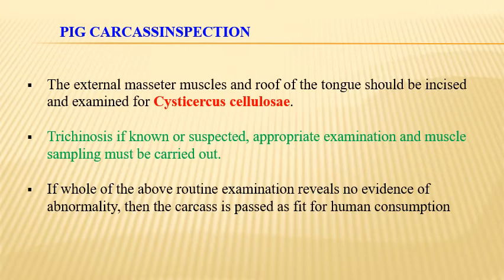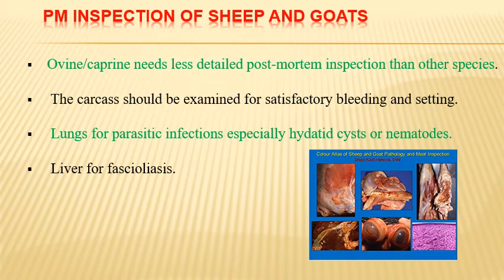Post-mortem inspection for sheep and goats: the procedures are almost similar to those explained for bovine. Ovine and caprine species need less detailed post-mortem inspection than other species. The carcass should be examined for satisfactory bleeding and setting. Lungs should be checked for parasitic infections, especially hydatid cysts or nematodes. And the liver should be checked for fasciolosis.